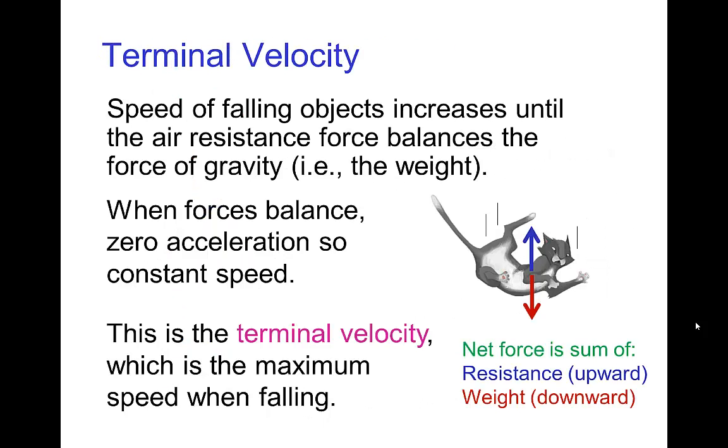What happens is when the air resistance force is large enough that it balances the force of gravity, then the net force is zero. And so by the law of acceleration, the acceleration will be zero, and so the speed stops changing, and we've reached the maximum velocity for falling. We call that the terminal velocity.